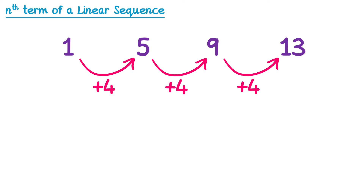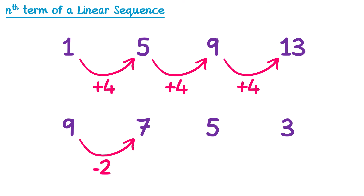This next sequence is also linear or arithmetic. To get from the first term to the second we subtract 2, it's the same from the second to the third, and the third to the fourth. So whenever a sequence follows a rule where to get the next term you always add the same number or subtract the same number, we call it a linear or arithmetic sequence.